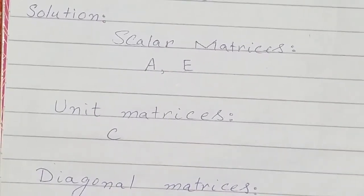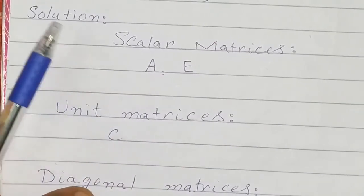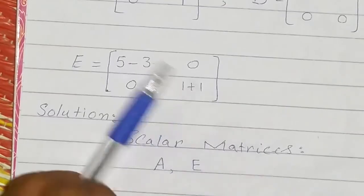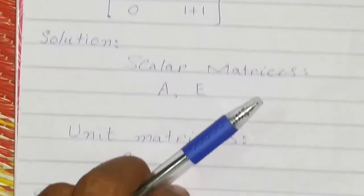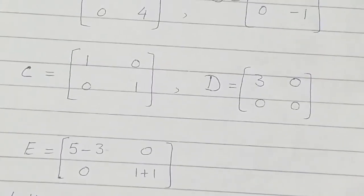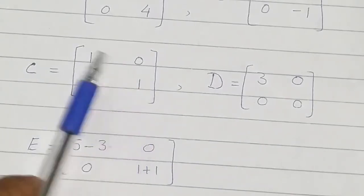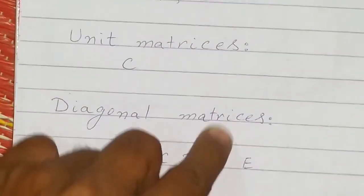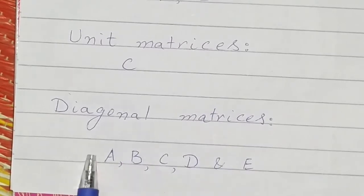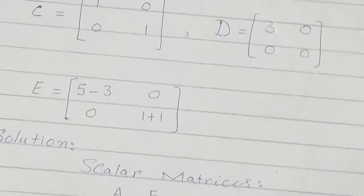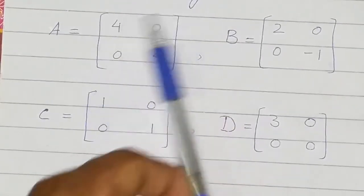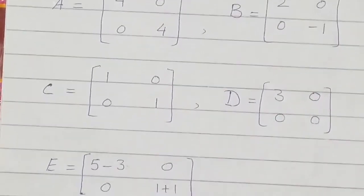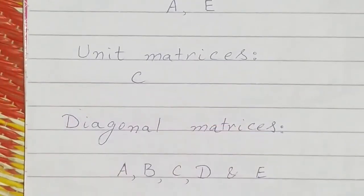Matrices A and E are scalar matrices: A has four in the diagonal and E has two in the diagonal. Matrix C is the unit matrix, as one is written in the diagonal and all other elements are zero. All the matrices here are actually diagonal matrices, because the only non-zero elements are in the diagonal.